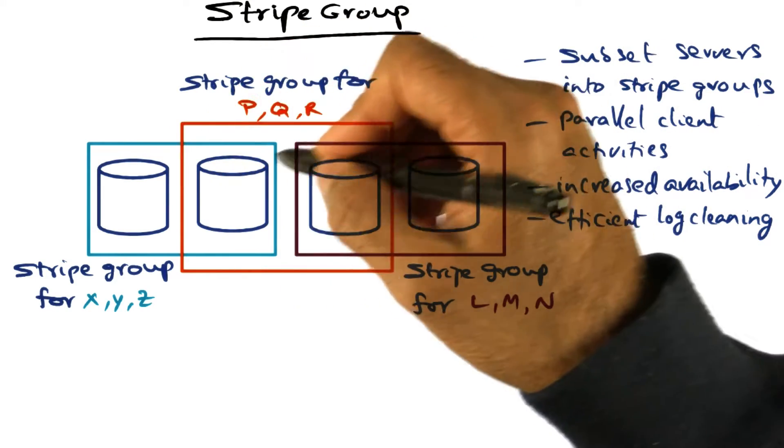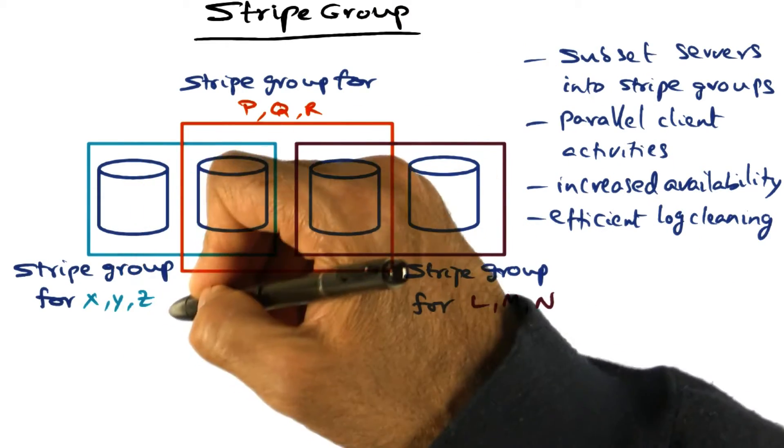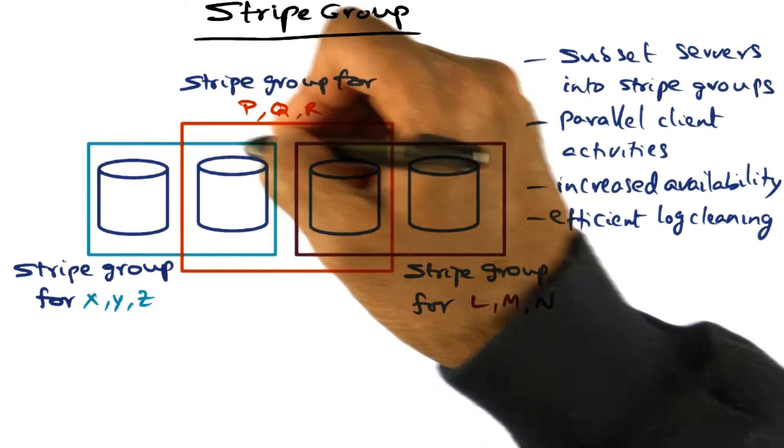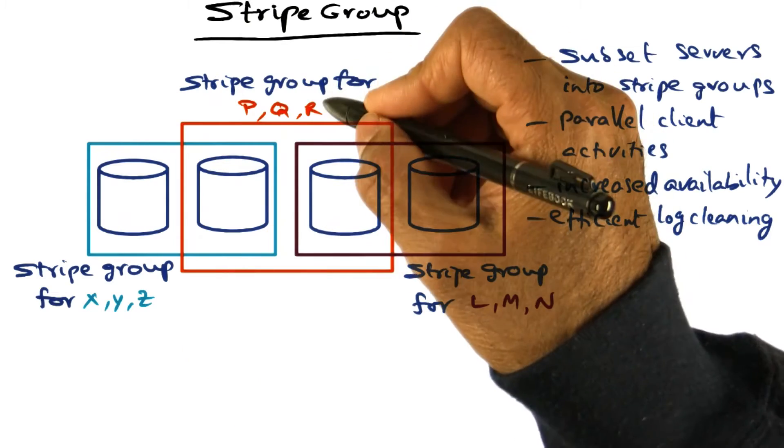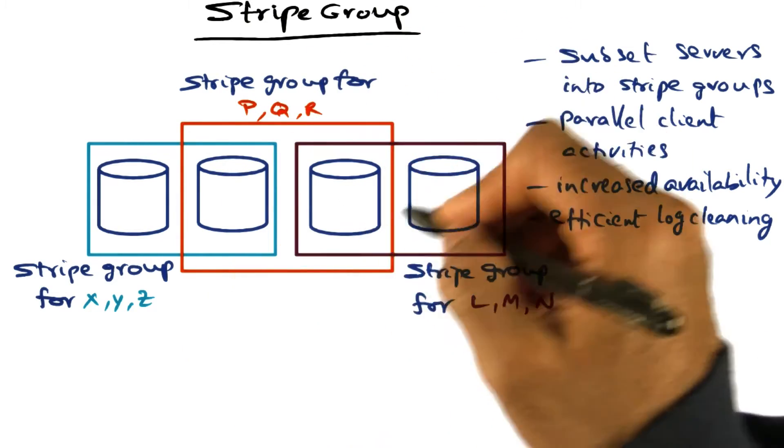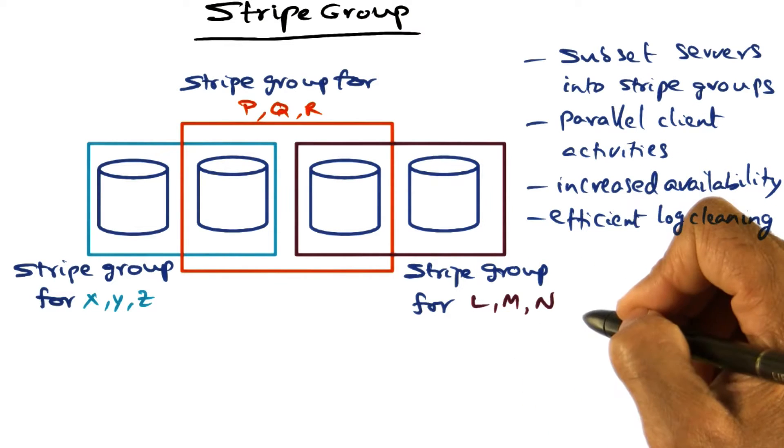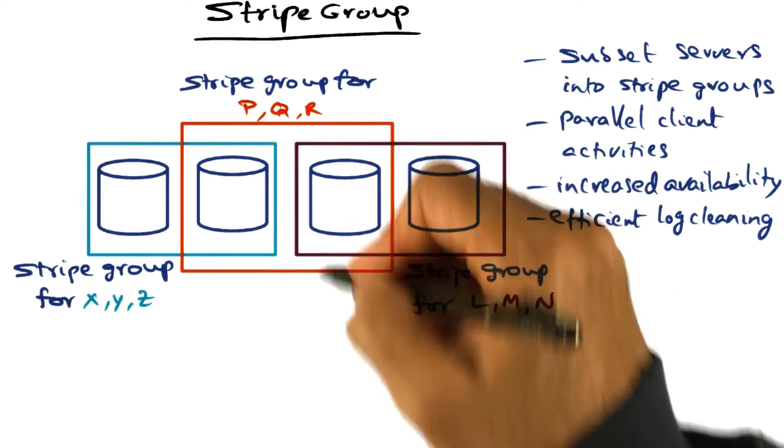So for instance here, we might decide that for certain log segments X, Y, and Z, the stripe group is this. And for another set of log segments, say P, Q, and R, the stripe group is this. And for another set of log segments L, M, and N, the stripe group is this.